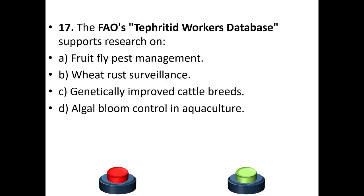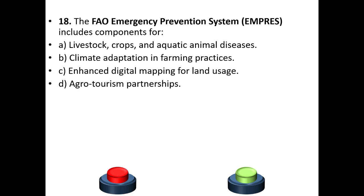Question 17: The FAO's DFRACTS workers database supports research on: a) fruit fly pest management, b) wheat rust surveillance, c) genetically improved cattle breeds, or d) harmful algal bloom control in aquaculture. The answer is option A — fruit fly pest management.